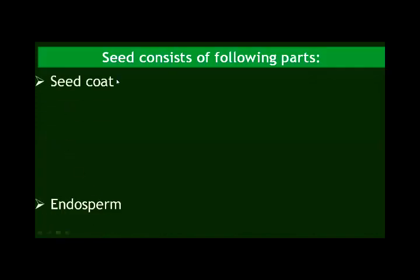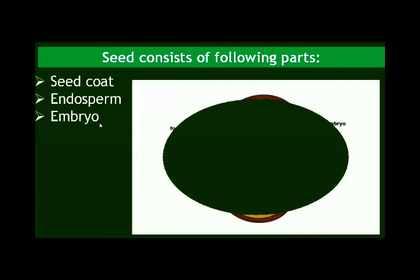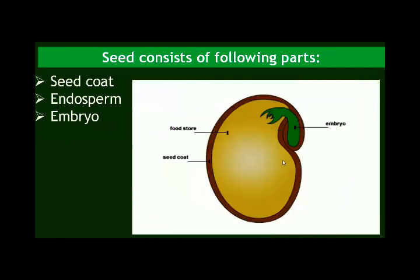Now see the next slide. The first part is the seed coat. The second is the endosperm. And the third is the embryo. This is a picture of a bean seed and you can clearly see the three main parts: the seed coat around the seed, the endosperm which is the food store, and the embryo.